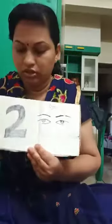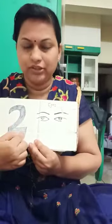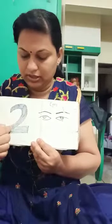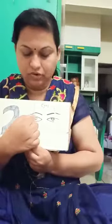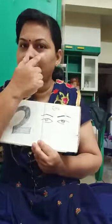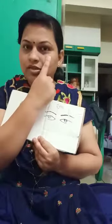Second — what comes after 1? 2 comes after 1. What is the picture here? Eyes. How many eyes do we have? 2. How many eyes do we have? 2.